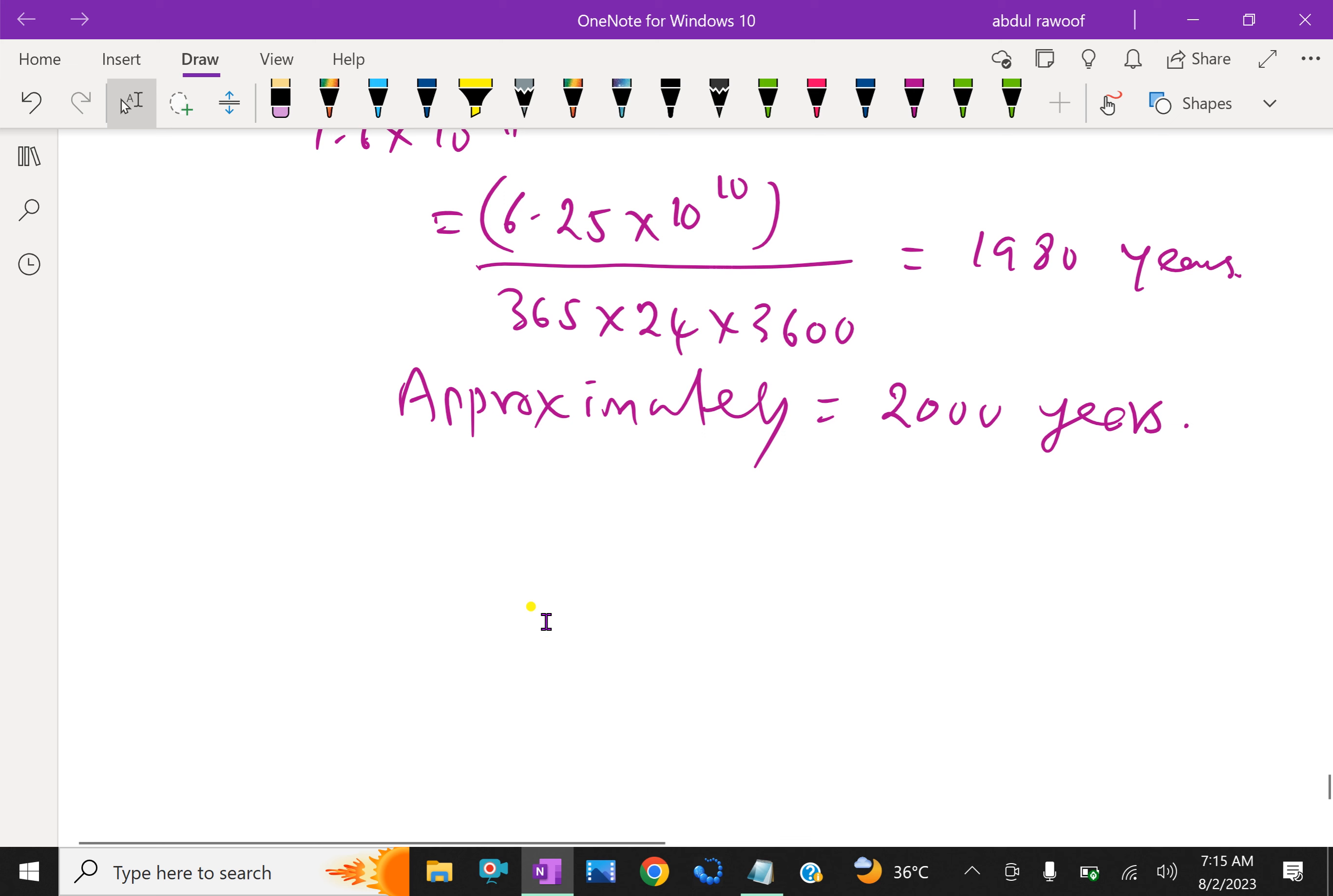It is also important to know what is roughly the number of electrons contained in a piece of one cubic centimeter of a material. For example, the cubic piece of copper of one centimeter contains nearly about 2.5 × 10^24 electrons. This is our extra information.